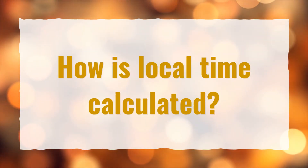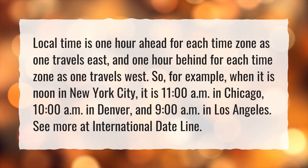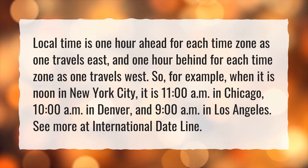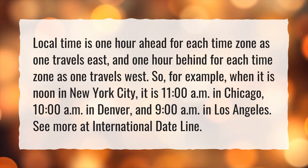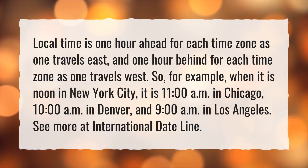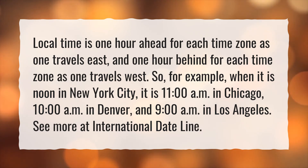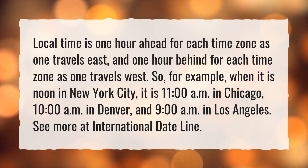How is local time calculated? Local time is one hour ahead for each time zone as one travels east, and one hour behind for each time zone as one travels west. So, for example, when it is noon in New York City, it is 11 a.m. in Chicago, 10 a.m. in Denver, and 9 a.m. in Los Angeles. See more at International Dateline.